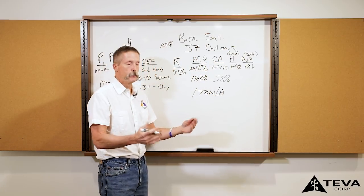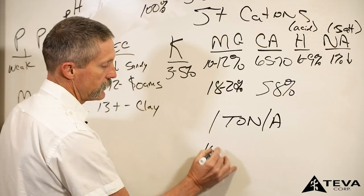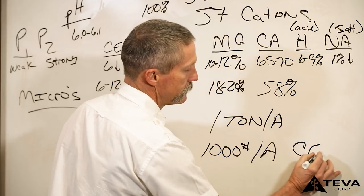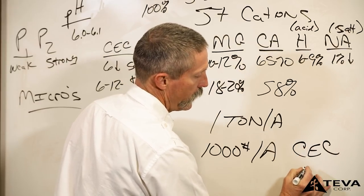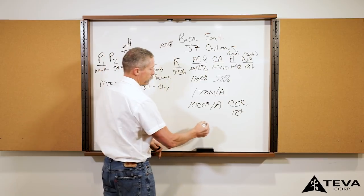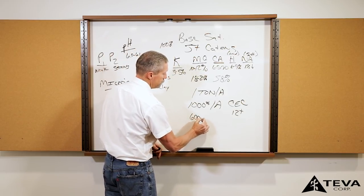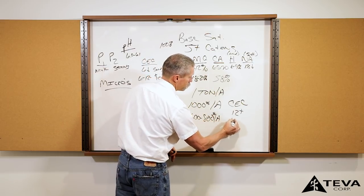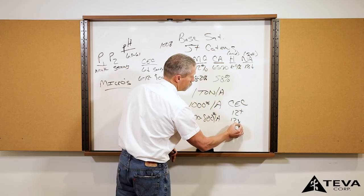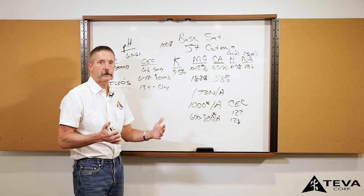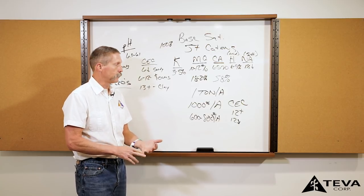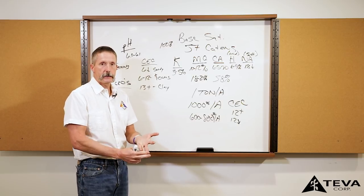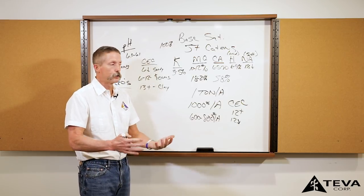What we recommend is a thousand pounds per acre if you've got CECs of 12 plus. I'm going to tell you from 600 to 800 pounds per acre if you're 12 or below, because the amount of sulfur that you're putting out there is going to have effect on your trace minerals too. If you put a lot of sulfur out there, you could lose boron, zinc, manganese, all the things that we do want to keep. So you can overdo a good thing.